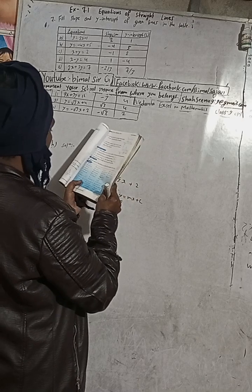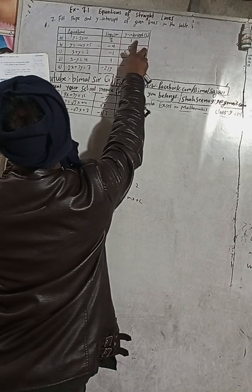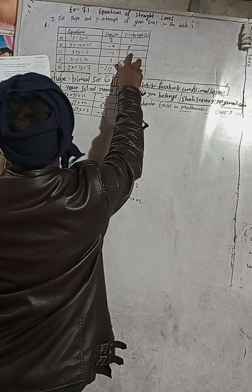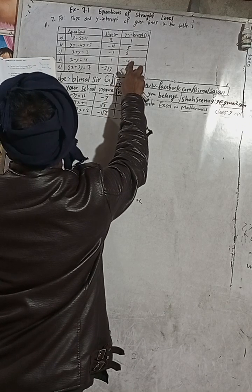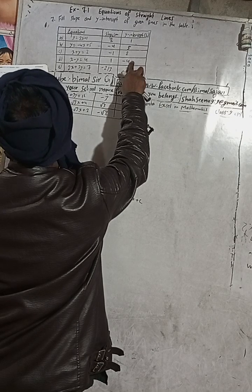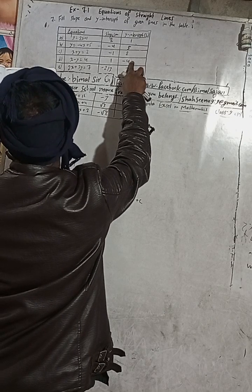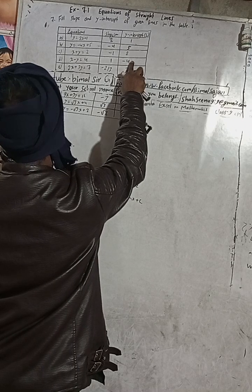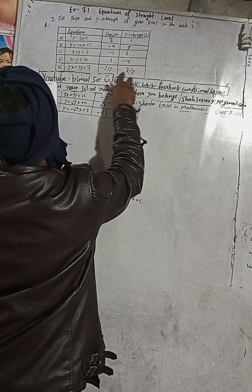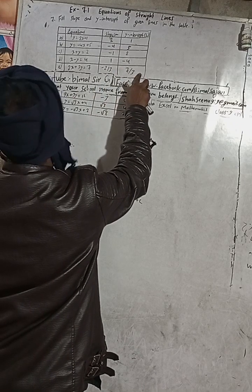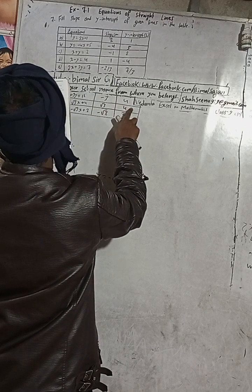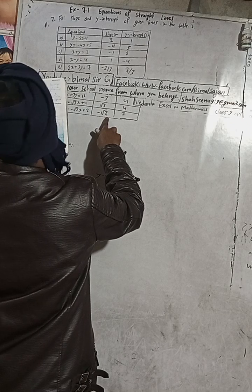Let me check the book answers: (a) slope 2, c=1; (b) slope -4, c=5; (c) slope -1, c=2; (d) slope 1, c=-4; (e) slope -2/3, c=7/3; (f) slope -3, c=4; (g) slope √3, c=4; (h) slope -√3, c=2.